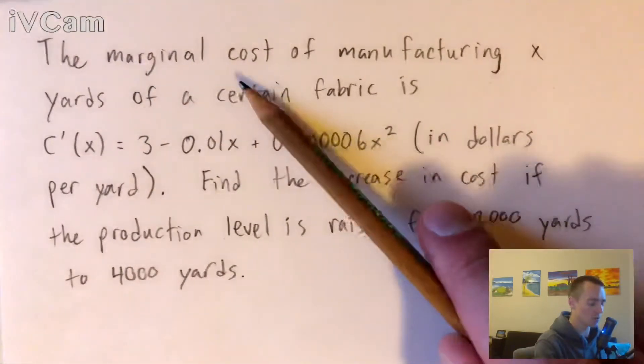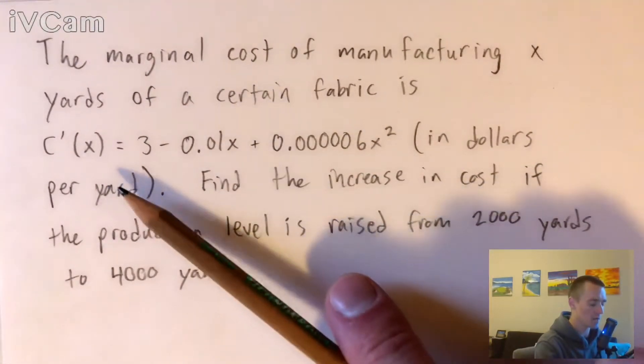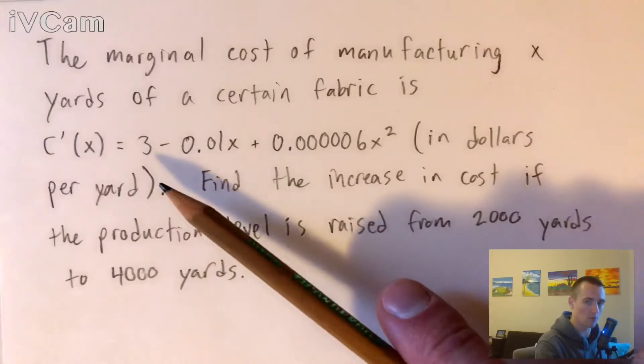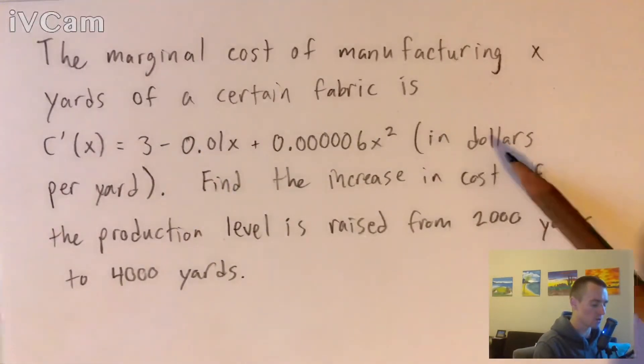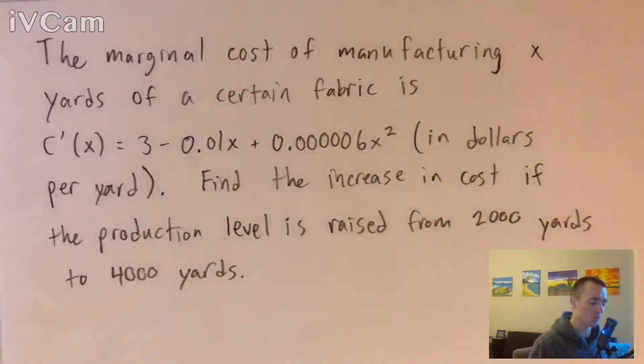In this case, marginal cost, this function here is just the derivative of total cost of producing those units. Since it's in dollars per yard, that tells us our original cost function would be in dollars, the input would be yards of material, which is what x is, and the output would just be dollars.